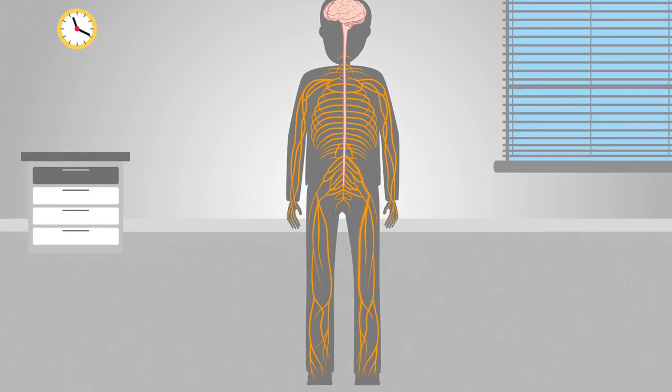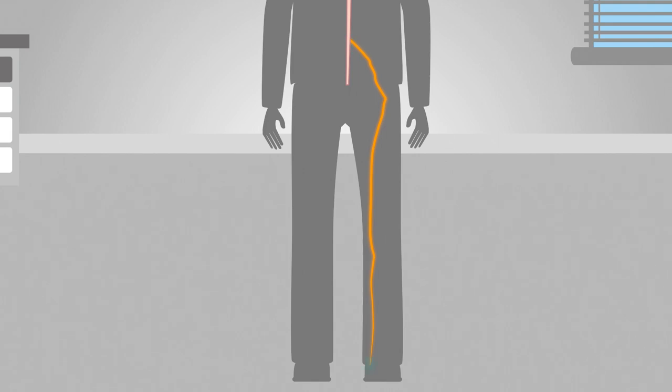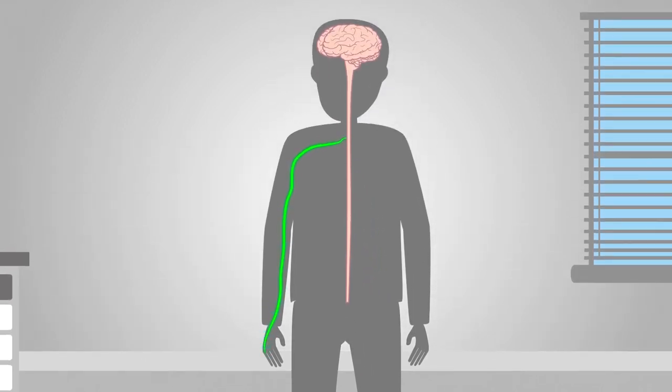Sensory neurons transmit signals to the brain from different parts of the body using electrical impulses known as action potentials. Motor neurons transmit signals from the brain to tell muscles what to do.